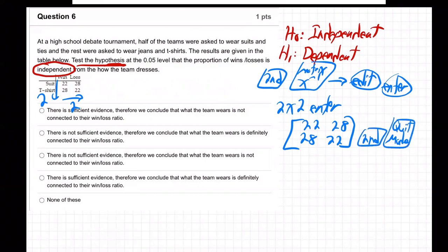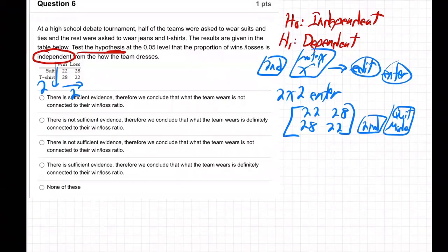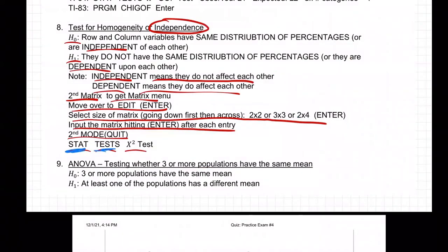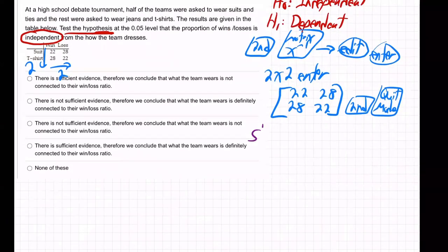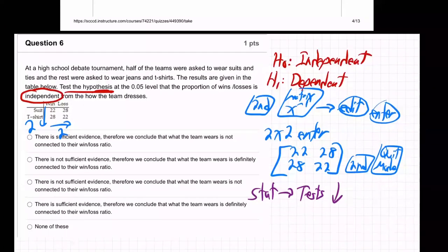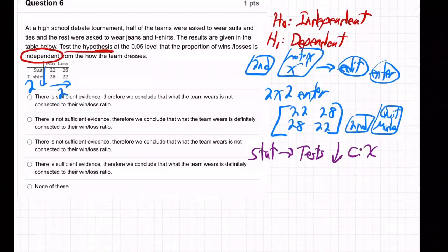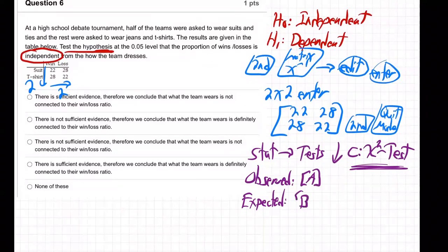And then go second and the mode quit button. So you quit that. And then where are we going from here? So after doing all that, it says go to stat test, X squared test or chi squared test. So go to stat over to test down to chi squared test, which is C. So not the chi squared goodness of fit test, which is D, just the chi squared test and hit enter. And when you do, it'll ask you observe, which is A, and expected, which is B, and then calculate.